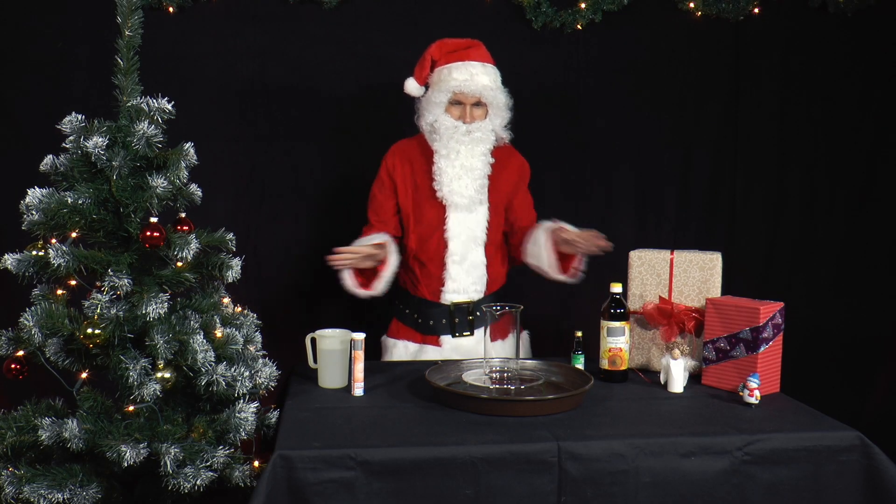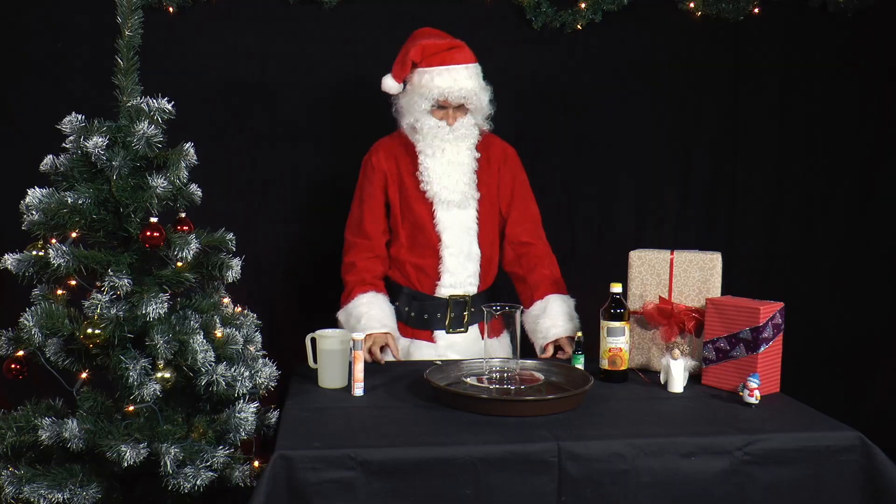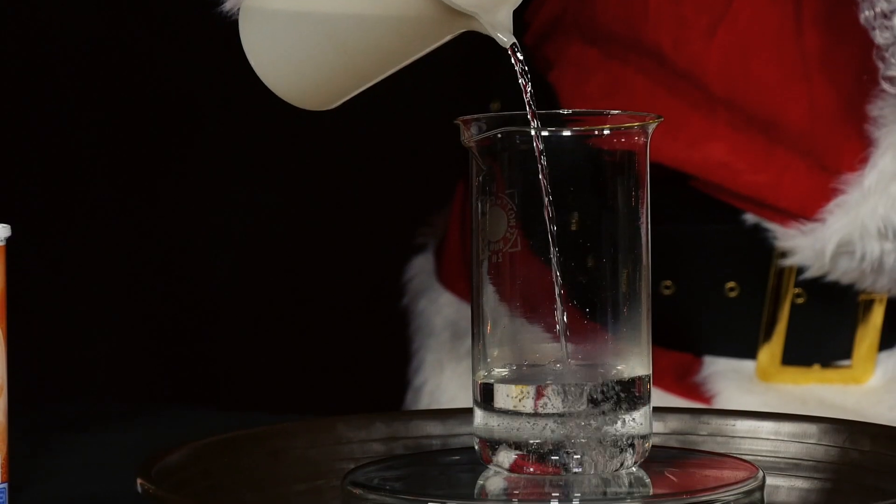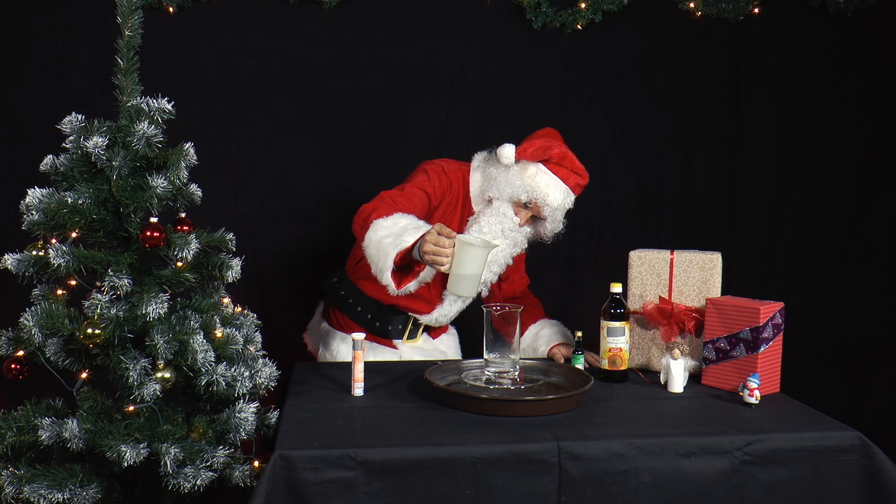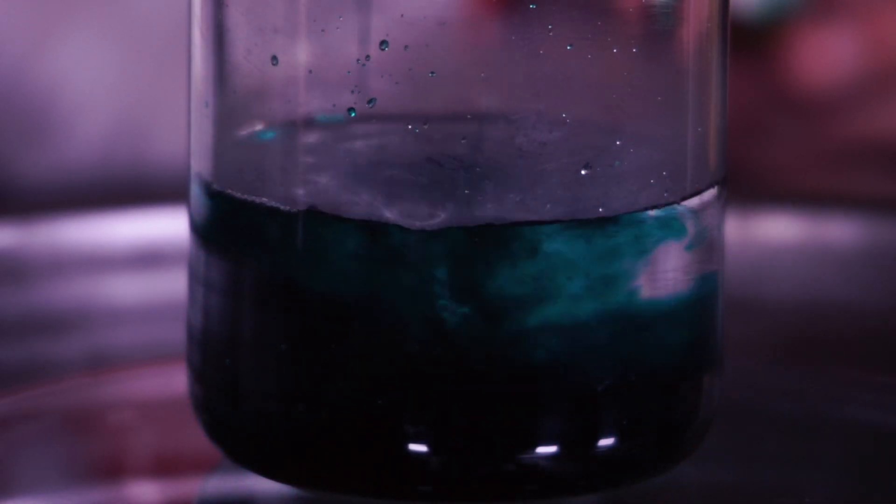For a special Christmas drink, Mr. Santa fills a glass 20% full with water. Add some green food coloring and then pours about 60% yellow cooking oil on top.